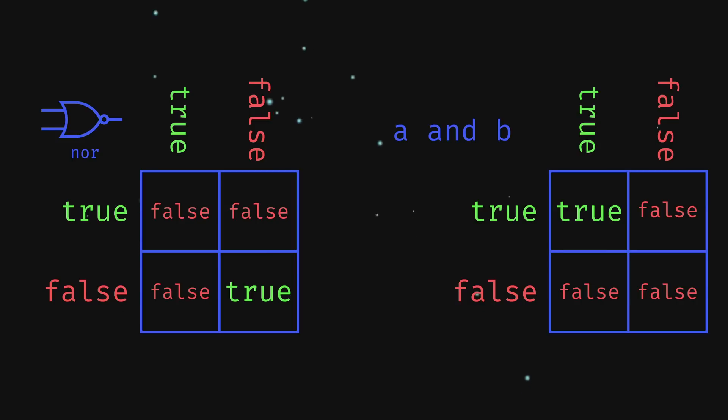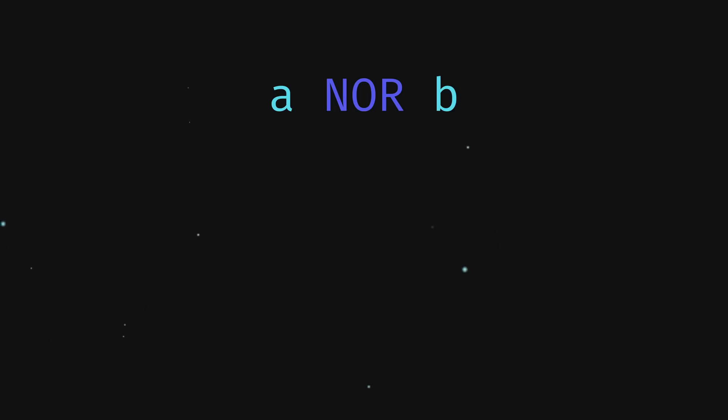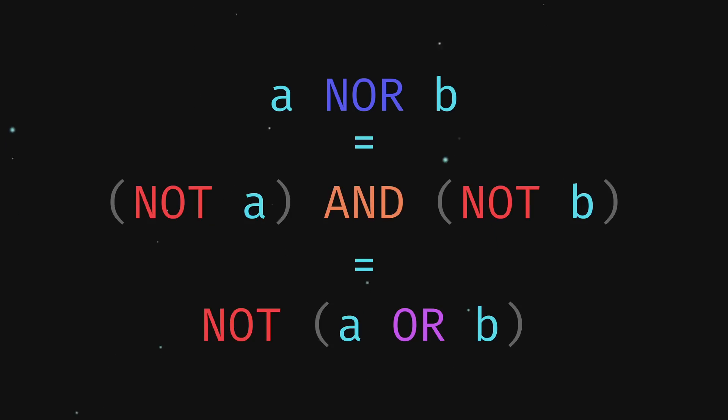Additionally, since a AND b returns true only if both inputs are true, then by applying not to each input before passing it to AND would also be equivalent to NOR. This means that any time we see NOR, we can swap it with one of these two without changing the end result.